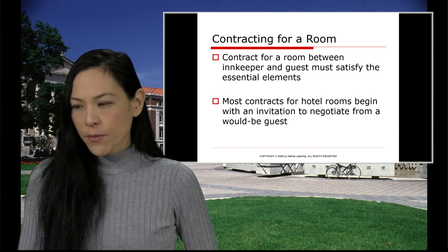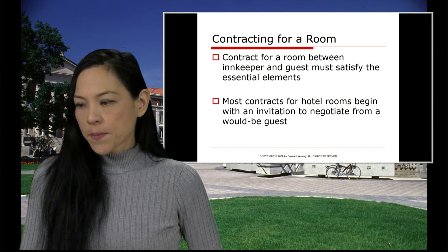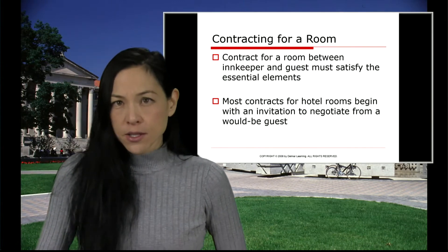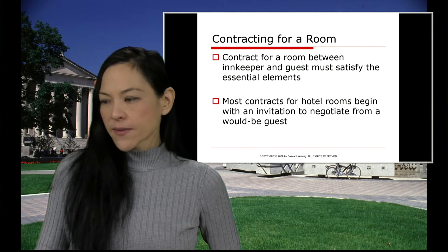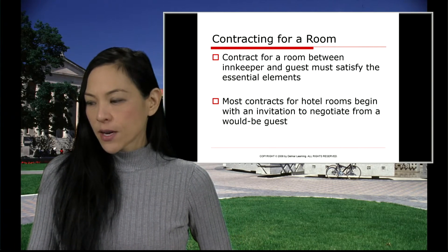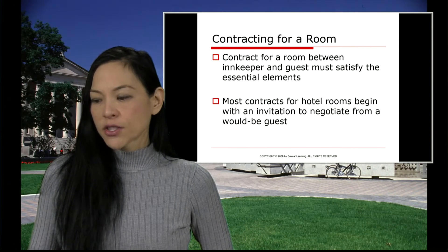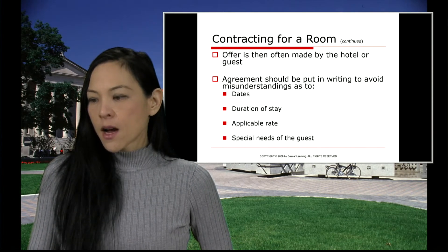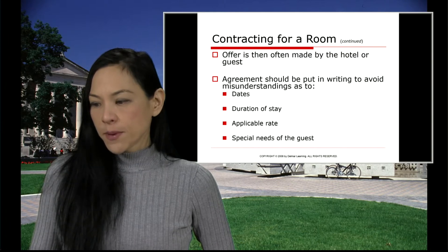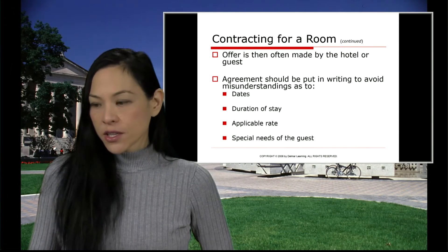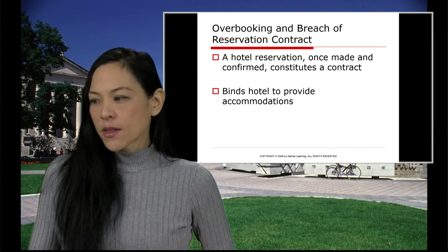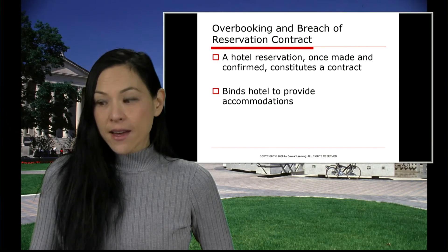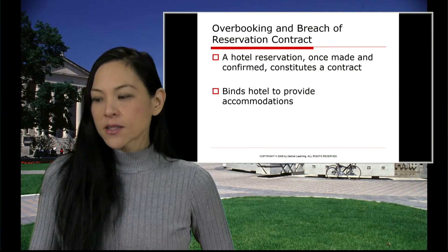Contracting for a room is very specific to hospitality. A contract for a room between the innkeeper and guest must satisfy the essential elements. Most hotel room contracts begin with an invitation to negotiate from a would-be guest. Contracting for a room should be in writing and should include the dates, duration of stay, applicable rate, special needs of the guest, overbooking policy, and breach terms. A hotel reservation once made and confirmed constitutes a contract and binds the hotel to provide accommodations.